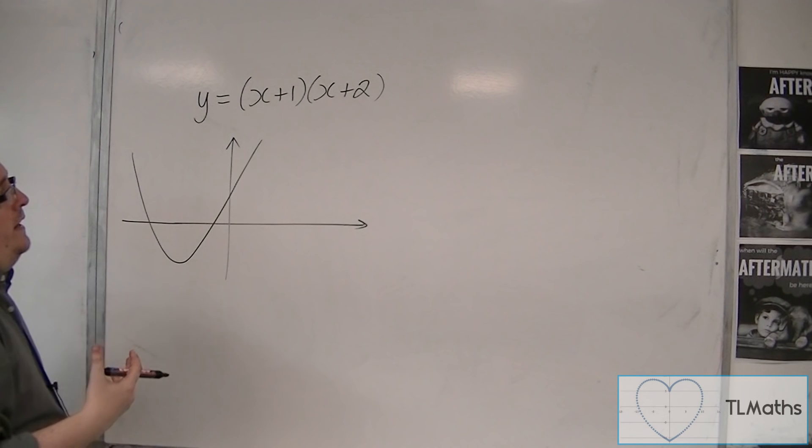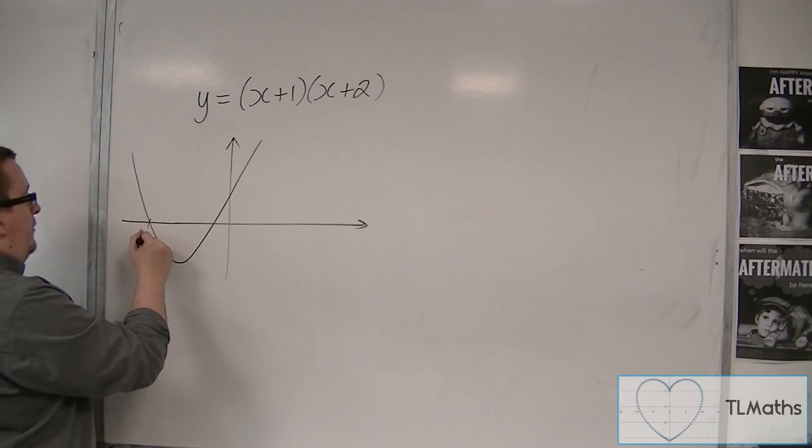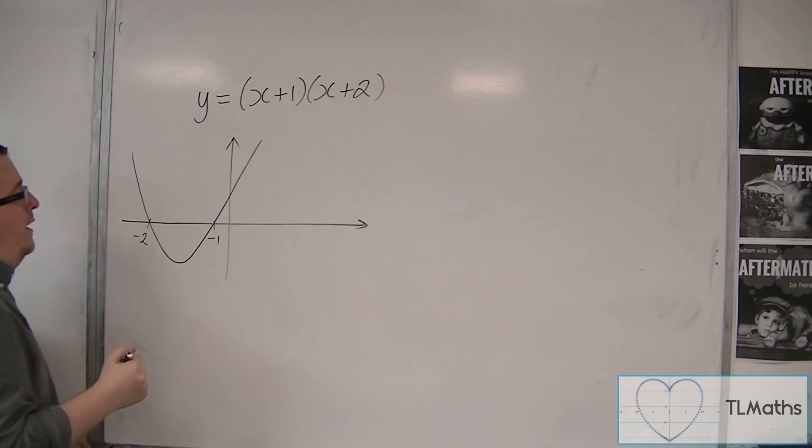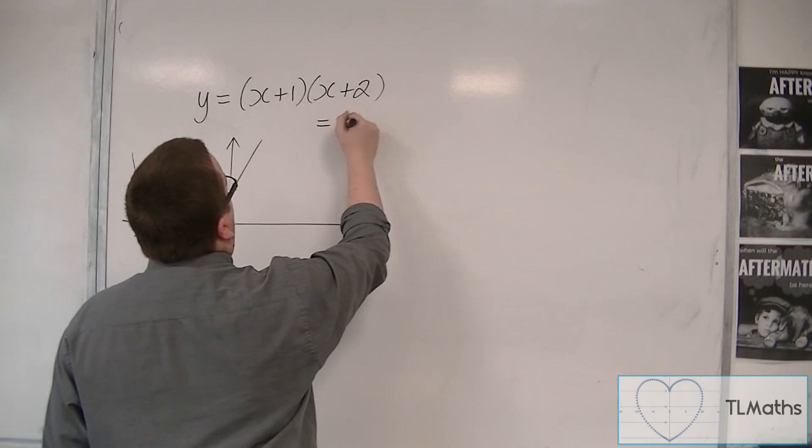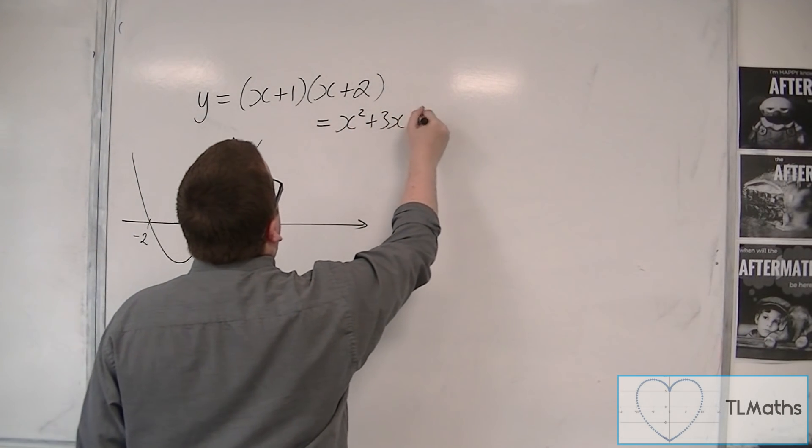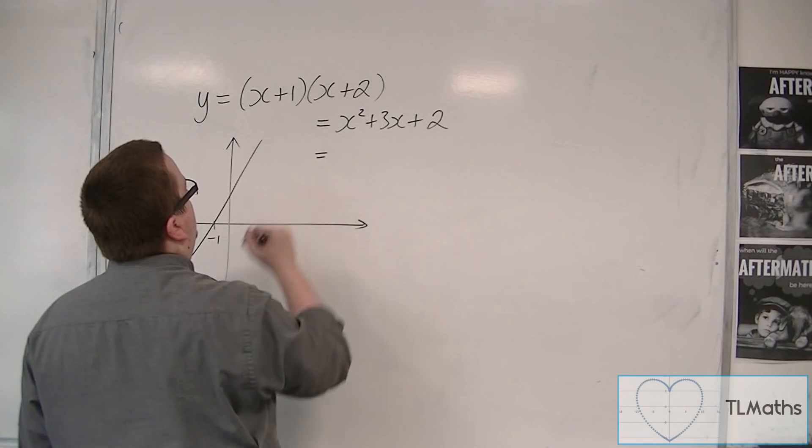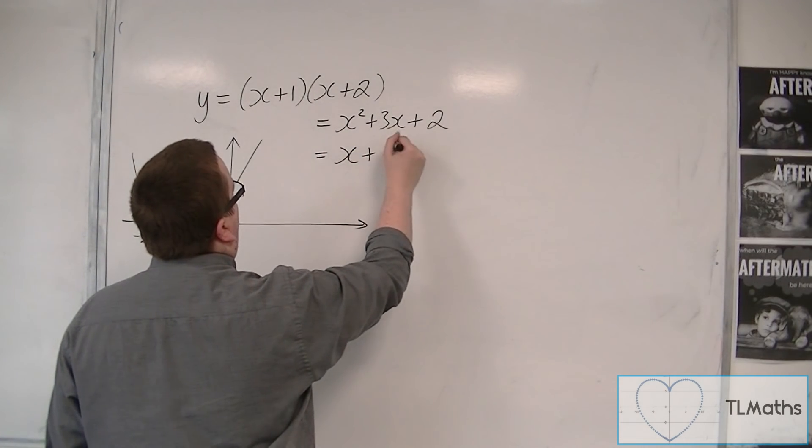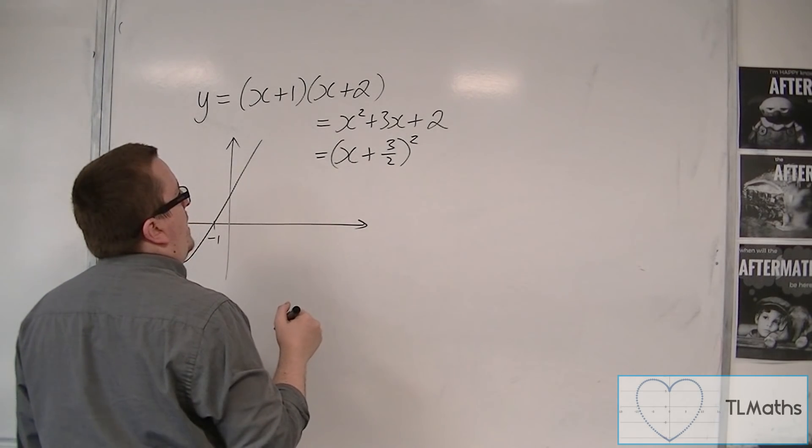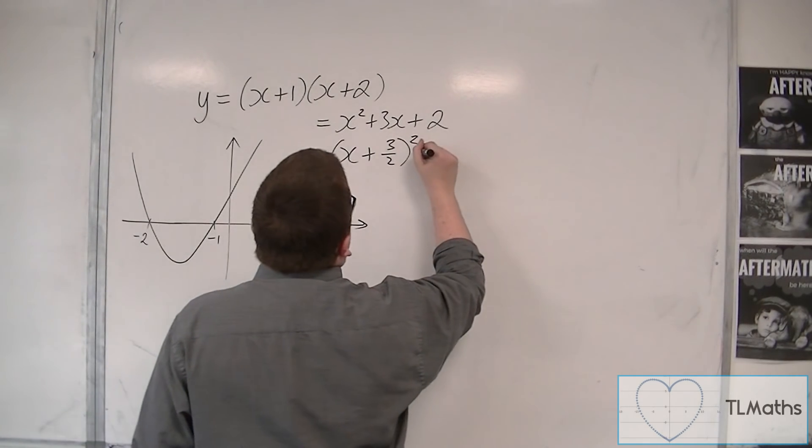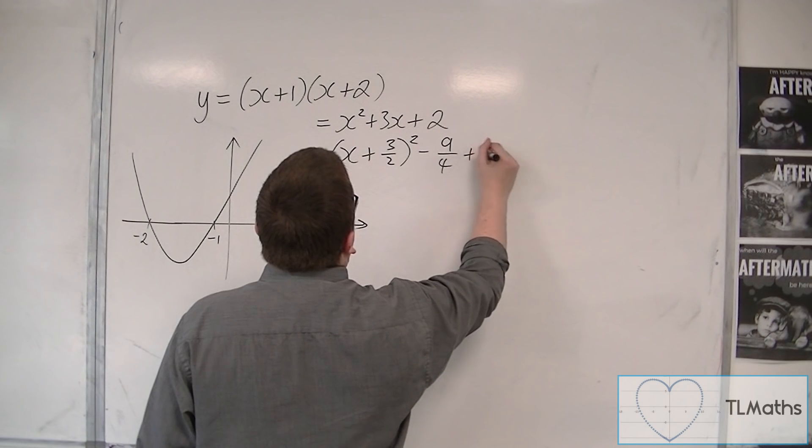So there's a few other things that I want to make sure that we identify. So that's minus 2, there's minus 1. Let's expand this out. So x squared plus 3x plus 2. So I'm going to complete the square: (x plus 3 halves) squared, take away 9 quarters plus 2.